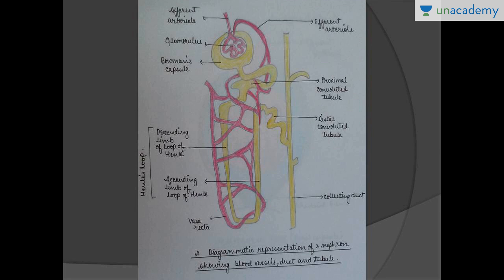This is the structure of a nephron — a picture of the nephron. Let me go over the parts. This red-colored part is basically a tuft of capillaries called the glomerulus. It has two limbs: the afferent arteriole and the efferent arteriole. This is the part of the kidney.